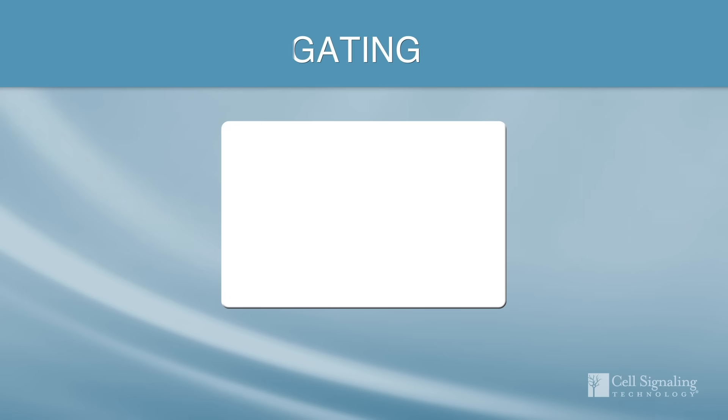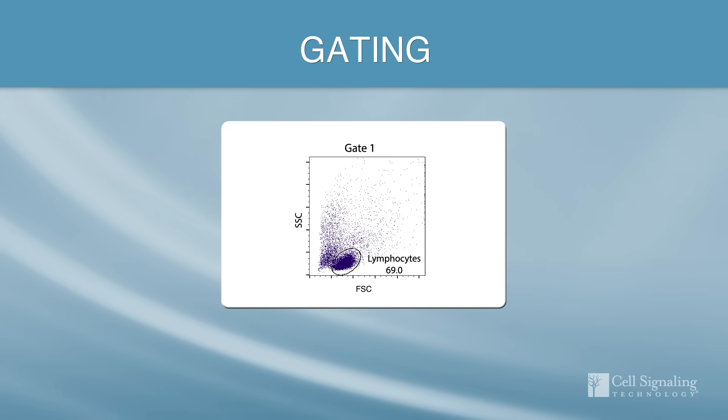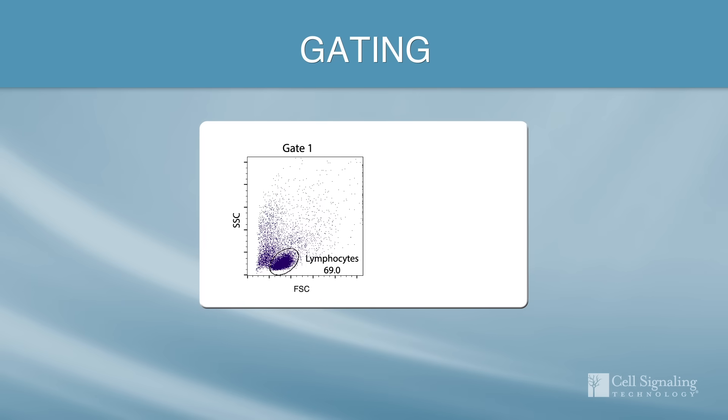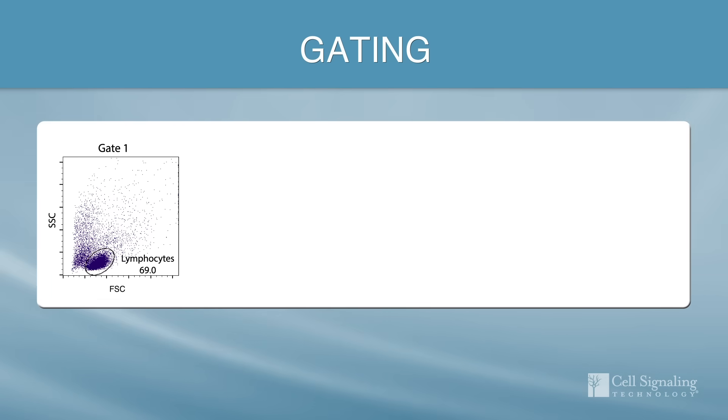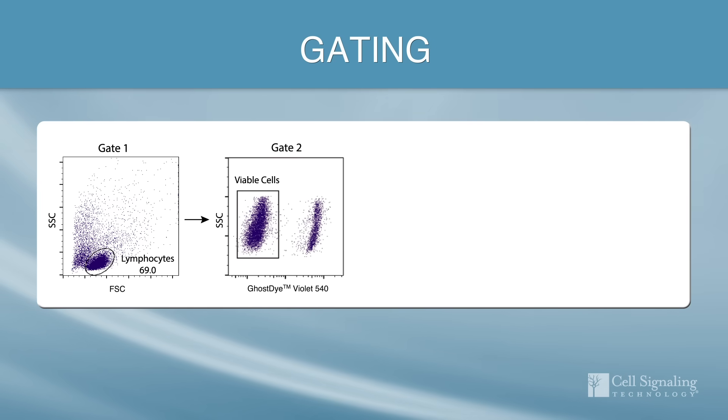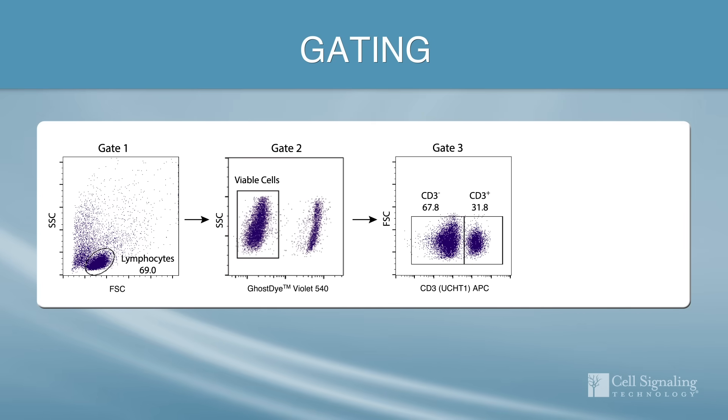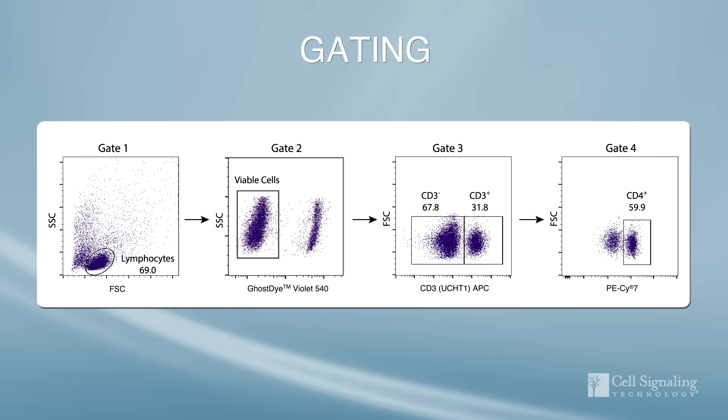To analyze SLP-76 activity in T cells, we employed a sequential gating scheme. Forward and side scatter were used in gate 1 to select lymphocytes. The live dead selection with Ghost Dye was used for gate 2, followed by selecting for CD3 expression in gate 3 and CD4 expression in gate 4.